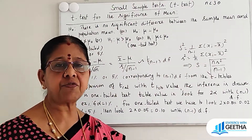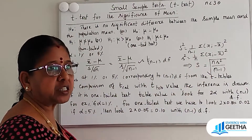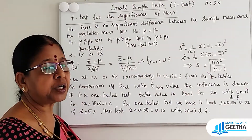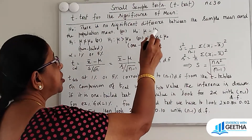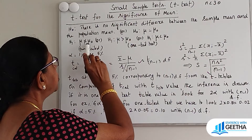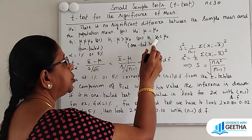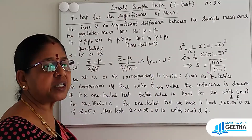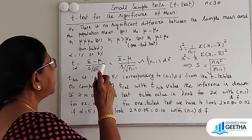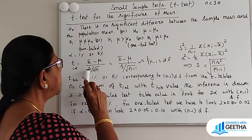We are going to test the significance of mean. H0: there is no significant difference between the sample mean and the population mean. That is, H0: mu equal to mu0. Alternative hypothesis H1: mu not equal to mu0, that is the two-tailed alternative. H1 may be mu greater than mu0 or mu less than mu0, that is one-tailed alternative. Alpha may be 1% or 5%. T calculated value statistic: T equals X-bar minus mu divided by capital S by root N.